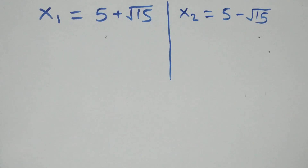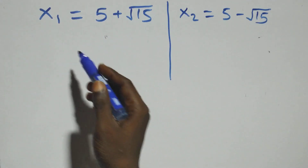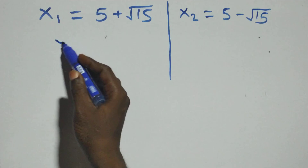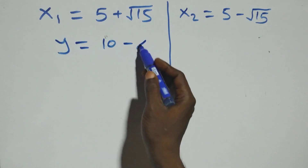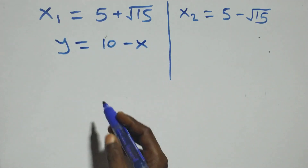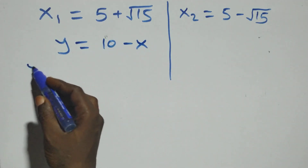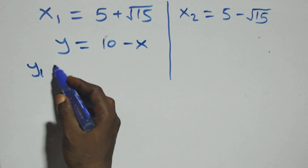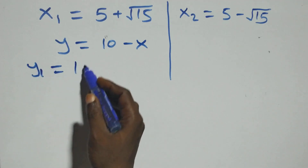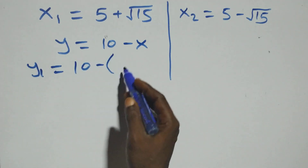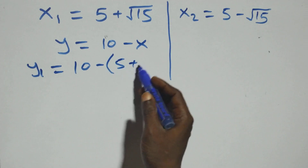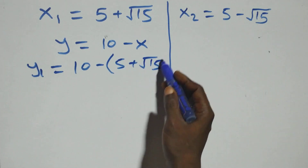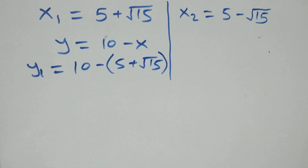Now we find the corresponding values of y using equation 3, which is y equals 10 minus x. For y1, we have y1 equals 10 minus x1, which is 10 minus (5 plus root 15).